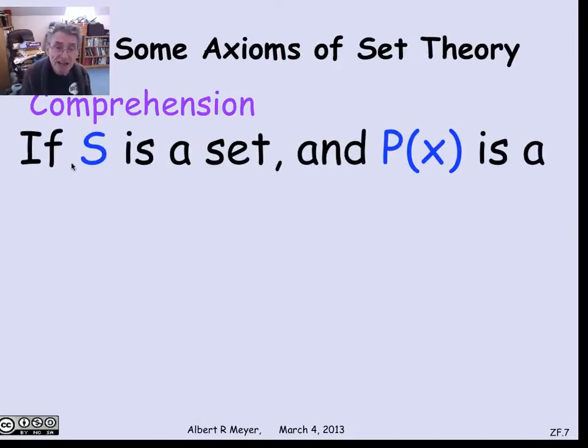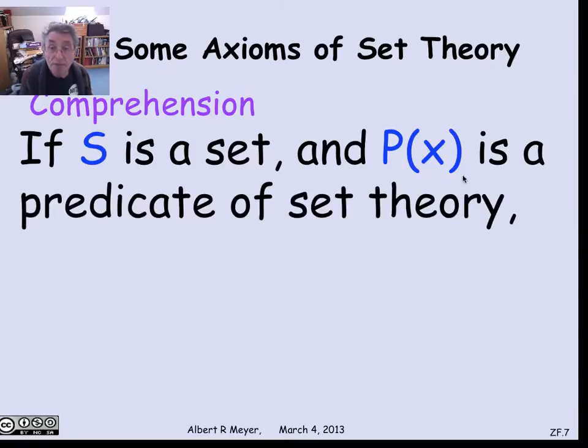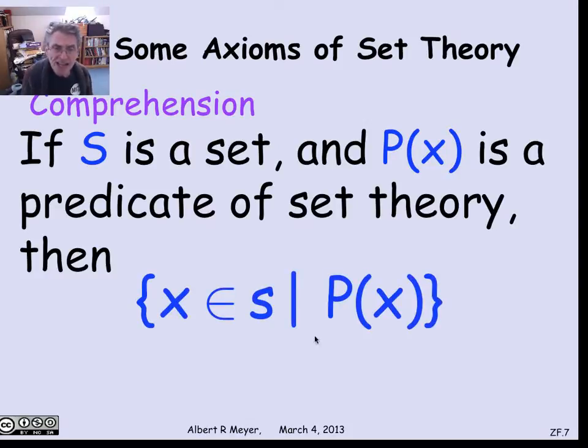It says that if s is a set and p of x is an arbitrary predicate of set theory, which might be one of these dangerous things like x is not a member of x, nevertheless, if you look at those elements in the set s that satisfy p of x, that's a set. In other words, the set of x in s such that p of x is a set.